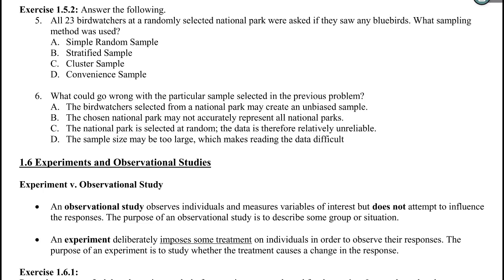Question 5: what sampling method is used? This particular question should be cluster sample. I have a lot of students choose convenience, and I see where you're headed with it — it's a lot easier to just go to one park. The reason I say this is a cluster sample over a convenience sample is that we did randomly select the park, and we talked to everyone at that park. A convenience sample would be if we just went to the closest national park — we chose it because it was convenient, not randomly selected. In this case we did a random selection, it just is of one group, so that is our cluster sample.